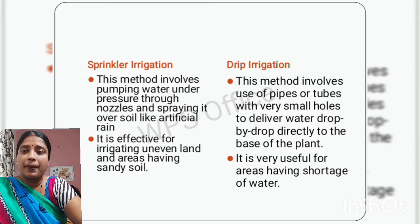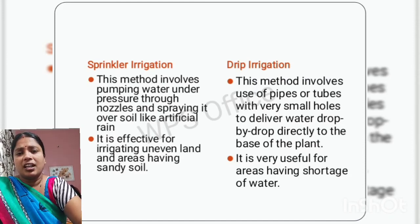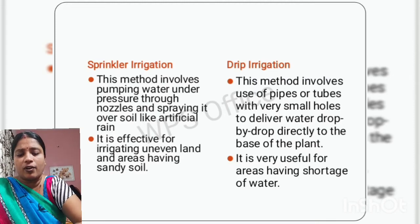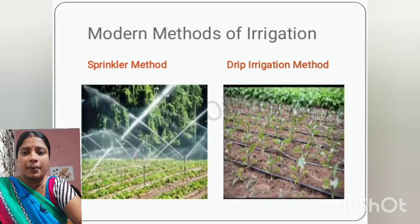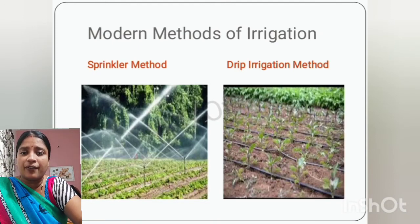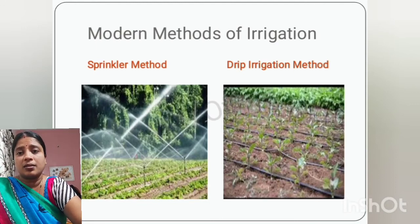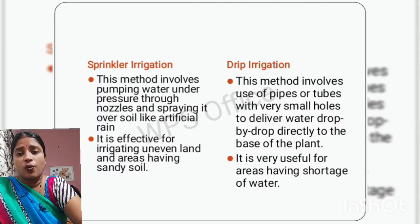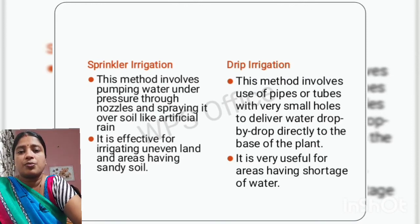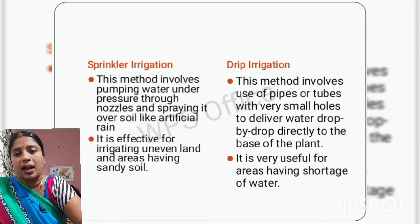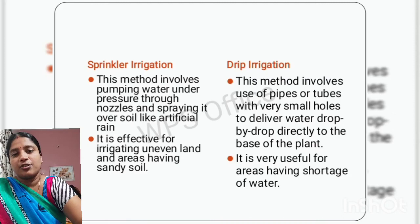On the other hand, drip irrigation involves the use of pipes or tubes which have very small holes. As you can see in the image, these pipe-like structures have holes in them. In this method, water comes out from those small holes drop by drop and is directly supplied to the base of the plant. This method is very useful for areas having shortage of water or water scarcity.